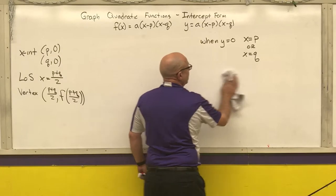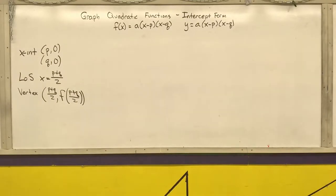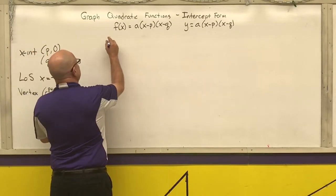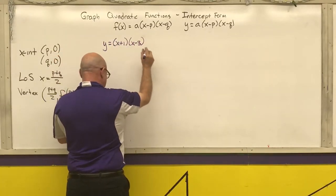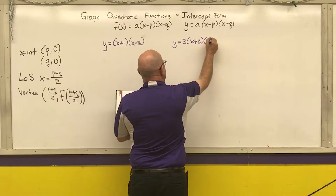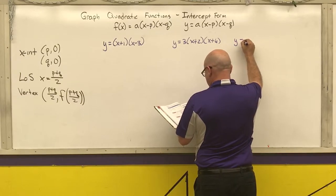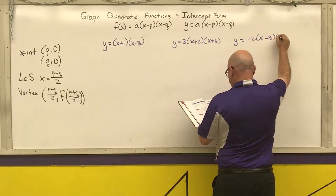And if it's in intercept form, the work is not very messy. Sometimes it can get tedious, but it's not really messy. So I'm going to do four examples in intercept form. We're going to graph y equals x plus 1 times x minus 3, y equals 3 times x plus 2 times x plus 6, and y equals negative 2 times x minus 3 times x plus 4.